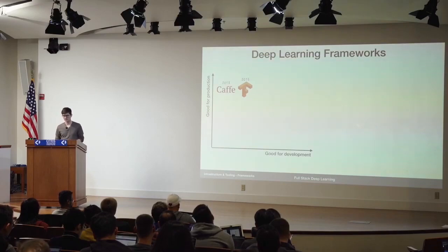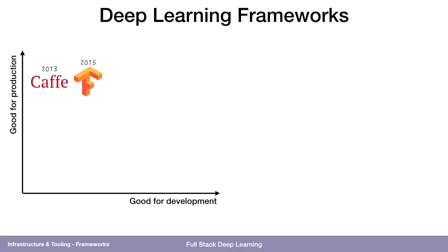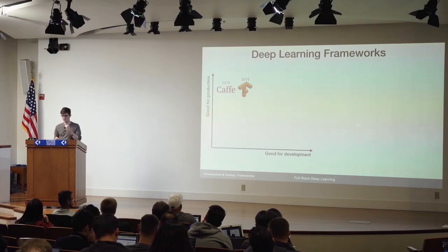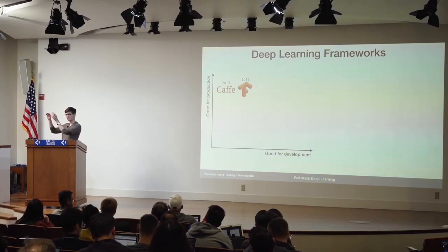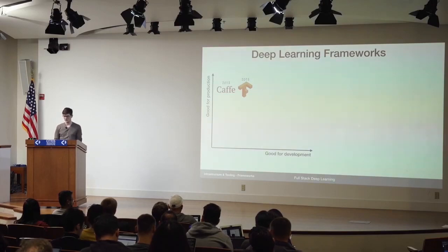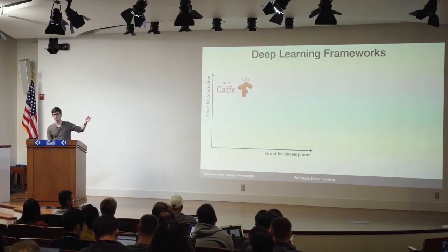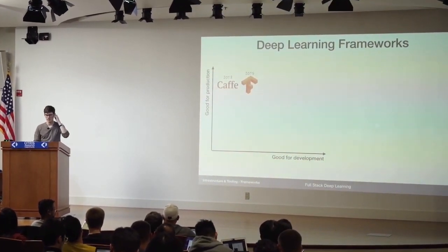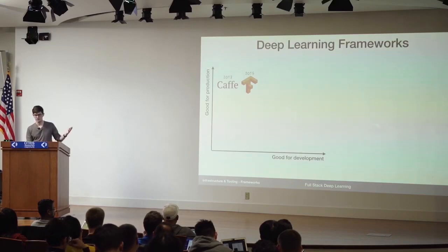TensorFlow came out in 2015. The original TensorFlow method was to describe in code a static graph that would run your computation. This is also not good for development because it's a metaprogramming way of writing your deep learning model — you're not coding what happens, you're describing the graph by which things will happen. That's just one level of indirection, which is kind of hard to think about. It was still very good because the Google team put a lot of effort into making it run on all kinds of hardware, but it was not very good for development in 2015.